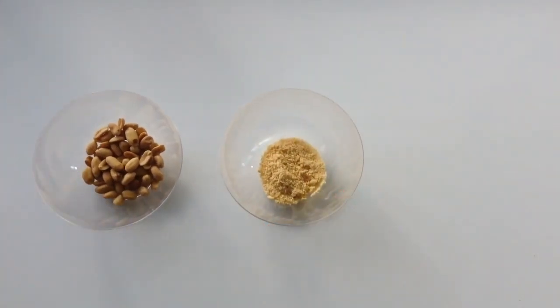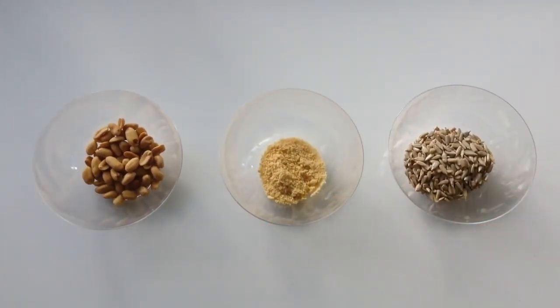Well, peanuts, nutritional yeast and sunflower seeds are some of the highest foods in niacin, with a quarter cup of peanuts having 30% of your daily value.